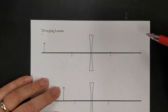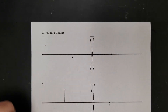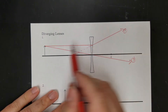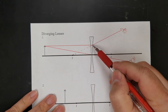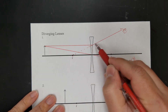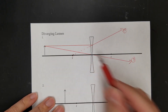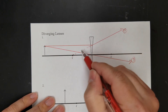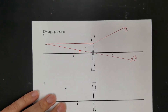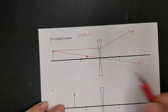Now, diverging lens. I'm going to skip ray 2 and just do ray 1 and ray 3. Ray 1 goes parallel, but because it's a diverging lens, it diverges away from the near focal point — I lined up my ruler with that point and it diverges away. Ray 3 goes straight through the center. Following these two rays back, ray 1 and ray 3 cross right there. Because it's a diverging lens, all images are going to be virtual and upright.